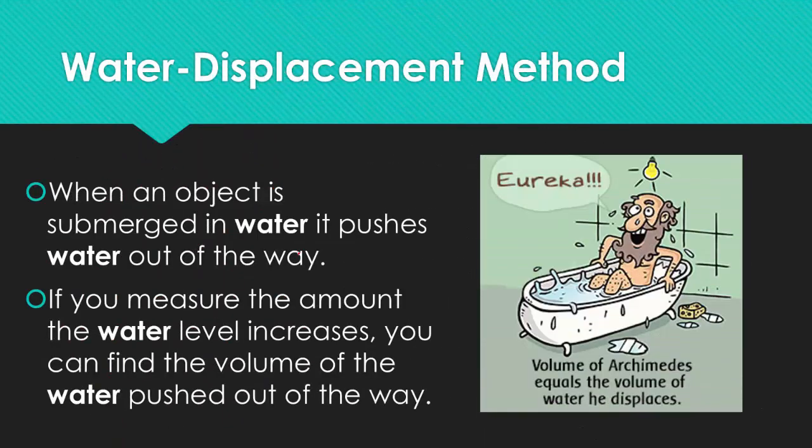There's also another method called the water displacement method, and this is for finding the volume. Very much like the picture is showing a man jumping in a bathtub, Archimedes once realized that the volume that you are is equal to the volume of the amount of water you were to displace if you jump into a bathtub. When an object is submerged in water, it pushes water out of the way. If you measure the amount the water level increases, you can find the volume of the water pushed out of the way.